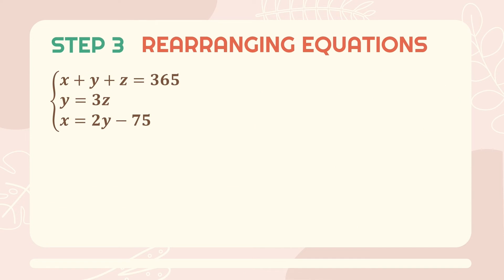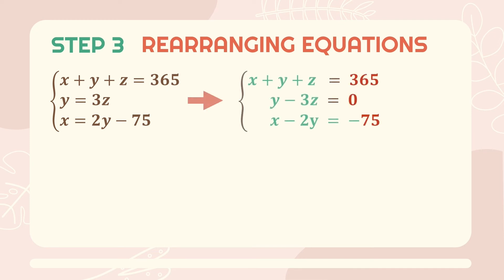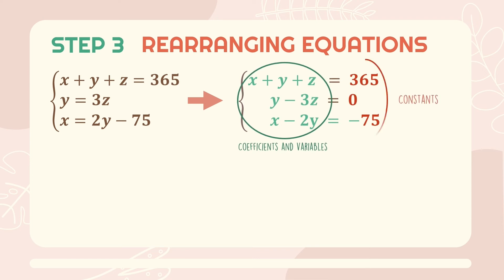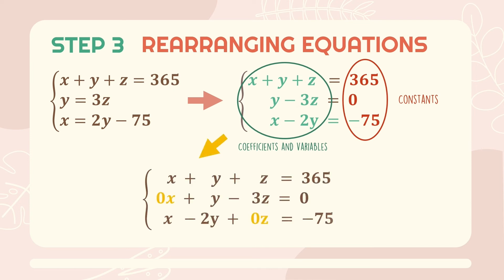Now that we have our system of three linear equations, let's verify they are arranged in the proper order. First, we'll arrange all coefficients and variables to the left side of the equal sign, and constants on the right side. Next, we arrange the left side in the order X, Y, and Z. This step is very important since it will help us later when building the matrix. As we can see, there are some missing variables.